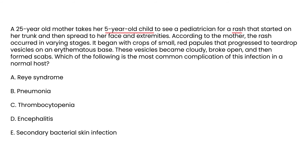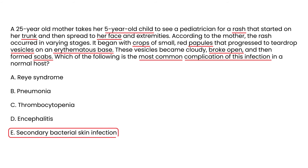Clinical vignette two: A 25-year-old mother takes her 5-year-old child to a pediatrician for a rash that started on the trunk and spread to the face and extremities. The rash occurred in various stages — crops of small red papules that progressed to teardrop vesicles on an erythematous base, which became cloudy, broke open, and formed scabs. The question asks for the most common complication of this infection in a normal host. The answer is secondary bacterial infection due most commonly to chronic pruritus.